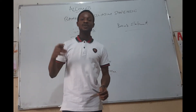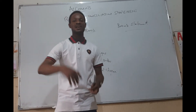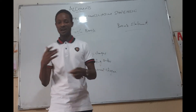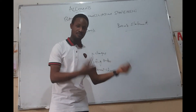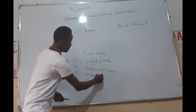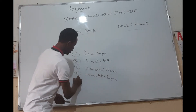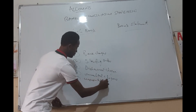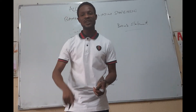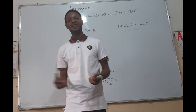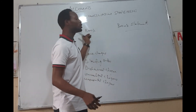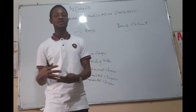Another cause of disagreement is dishonoured checks. These are checks that the business lodges in the bank but are rejected for several reasons — irregular signature, insufficient funds, or any other reason. Then you also have uncredited checks. Uncredited checks are checks that the firm lodges in the bank, but because of date differences — say on the 30th of a month the firm lodges a check — it will be shown in the cash book.